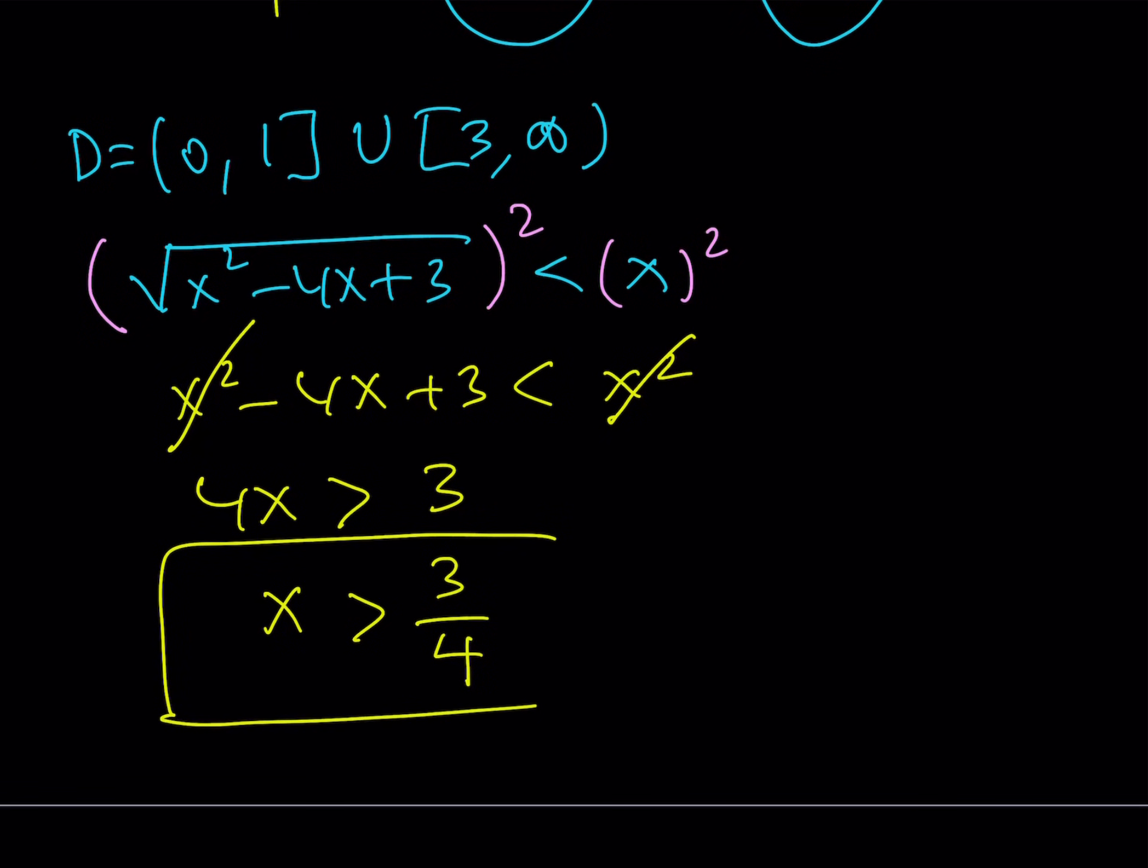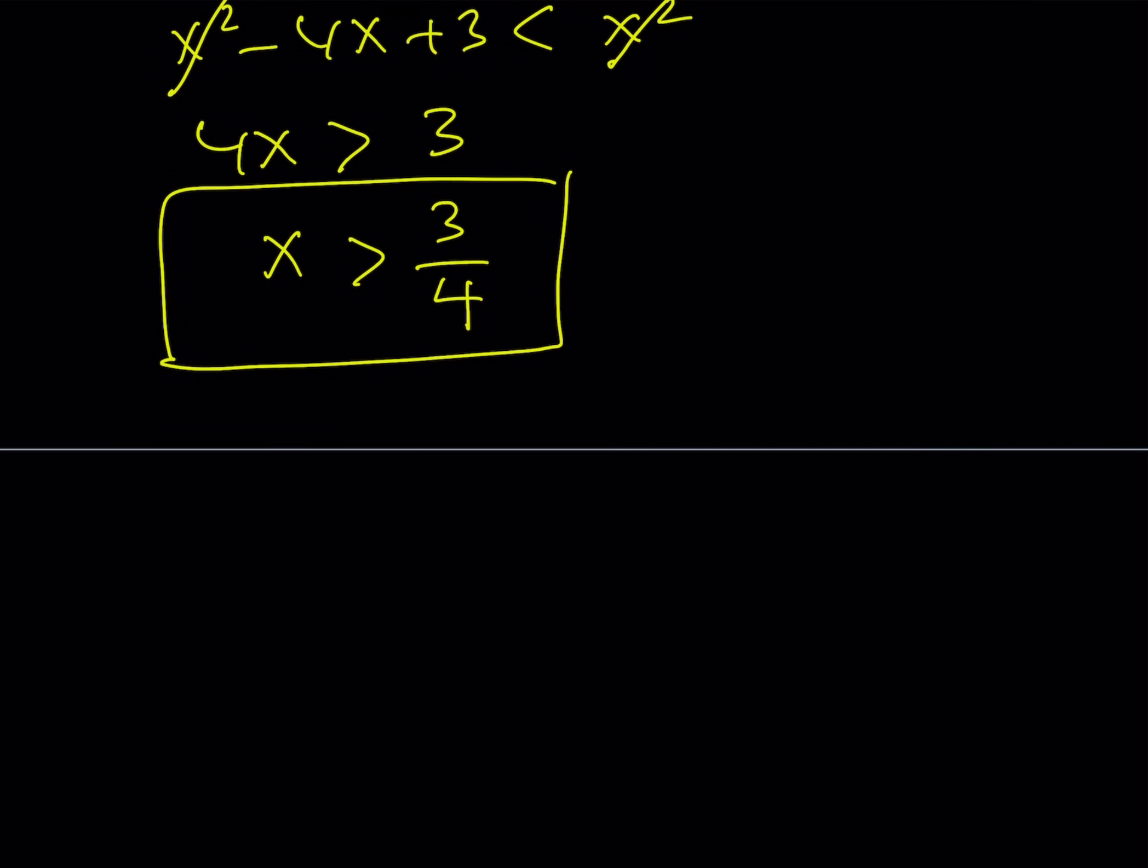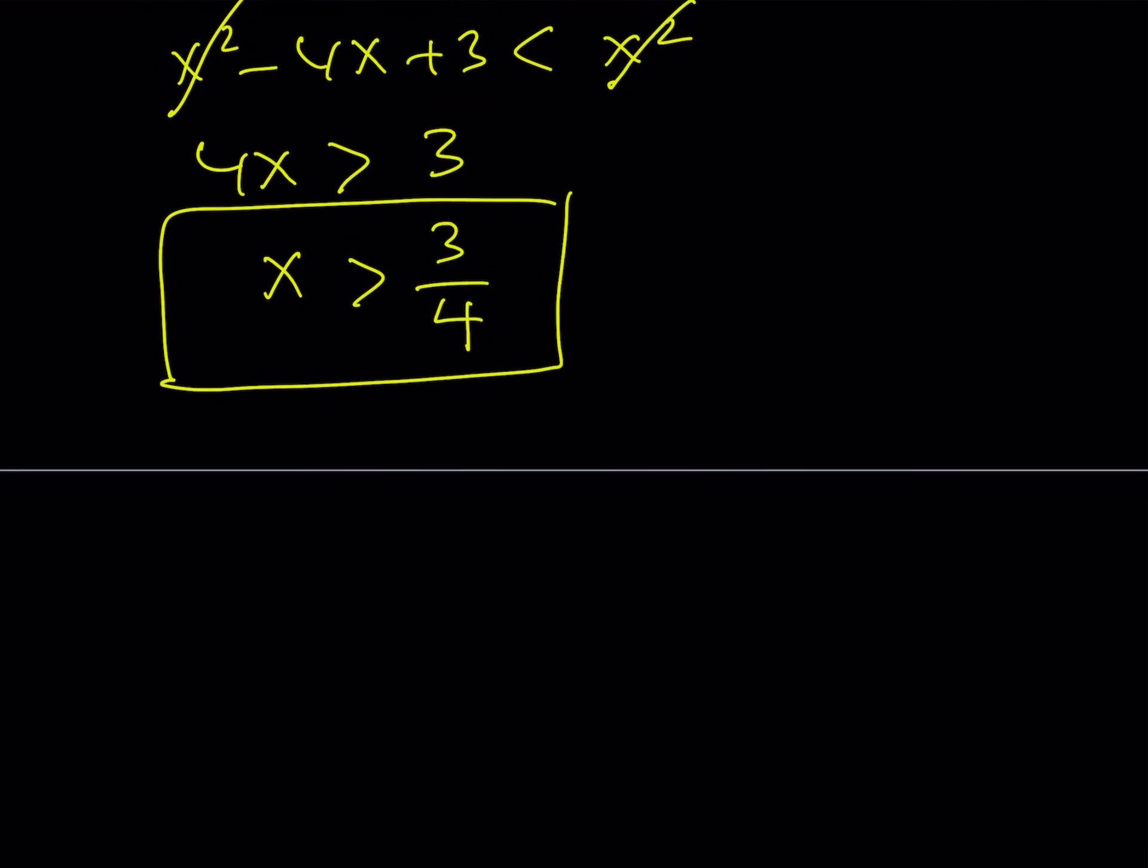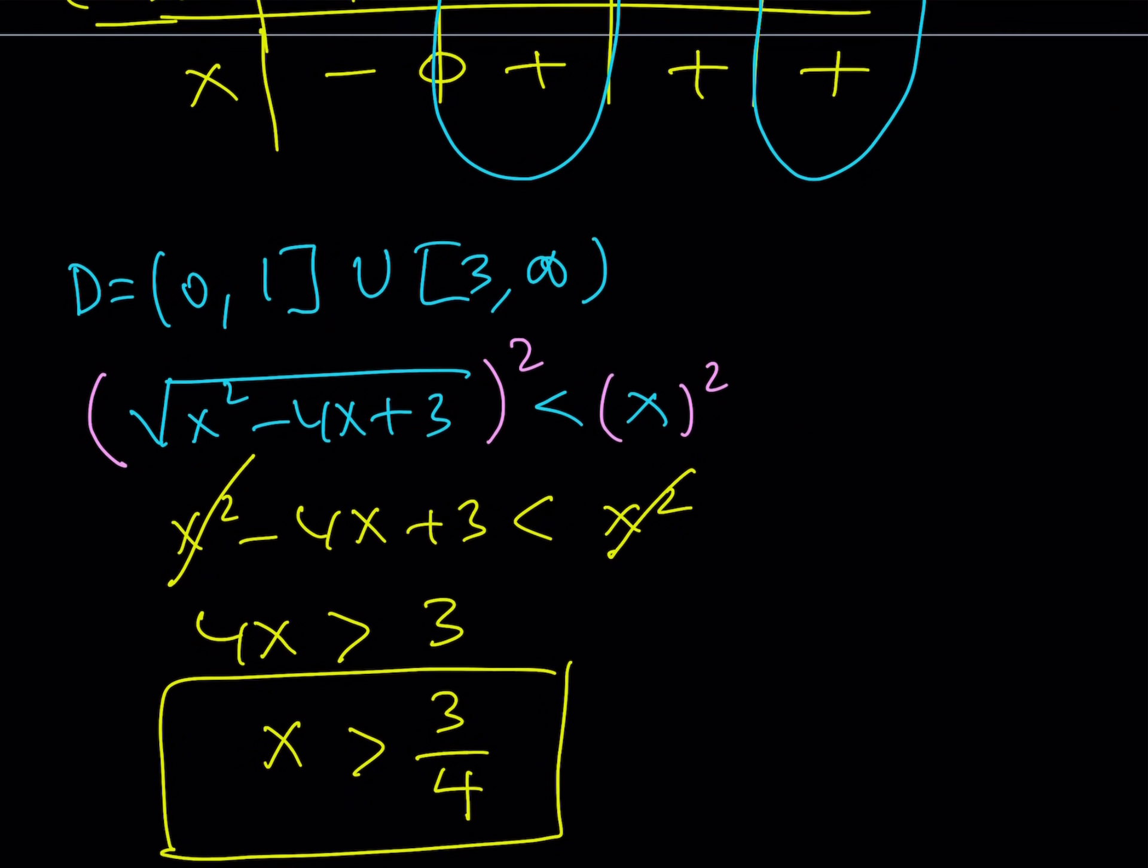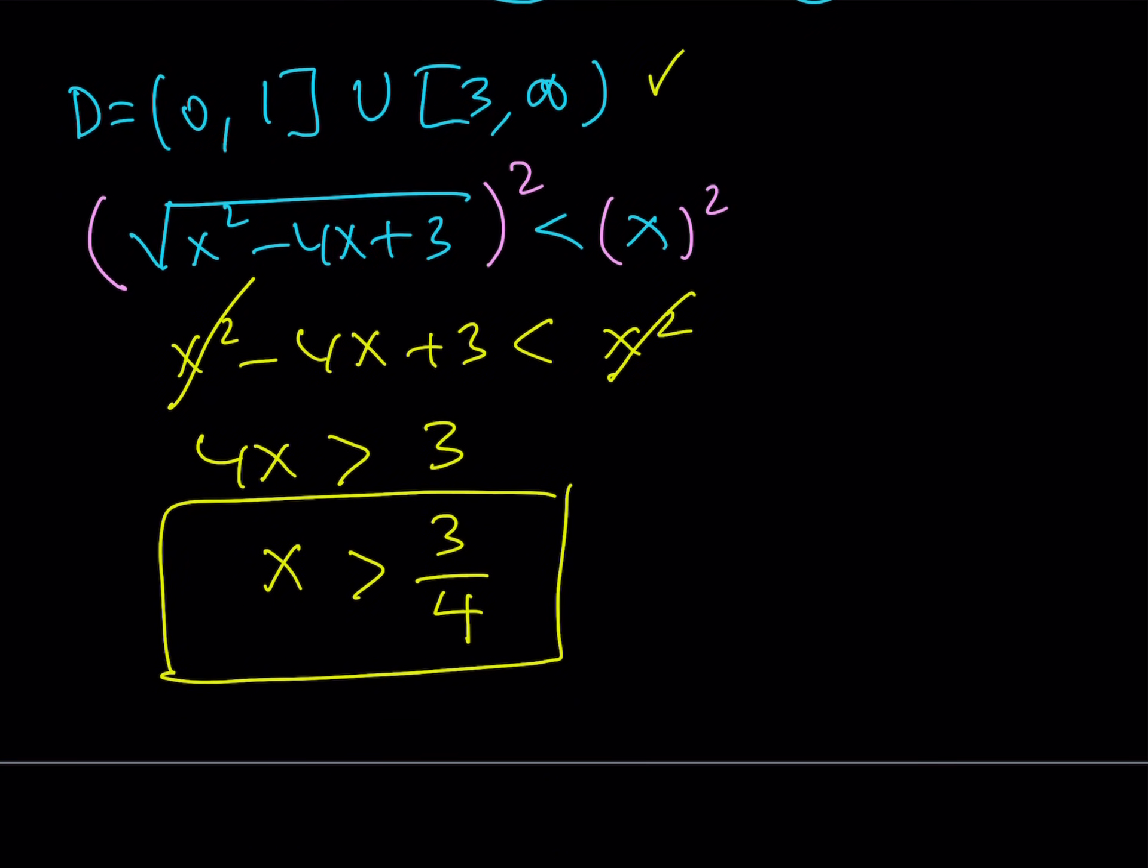So this is the solution to my inequality. But this needs to be consistent with the domain because if my solutions are not within the domain, then we have a problem. So I got to make sure that x is greater than 3 fourths is allowable. Let's go ahead and check here. Well, my domain says something like this, right? My x values need to be between 0 and 1 or 3 to infinity. Well, if you check 3 fourths here, 3 fourths,